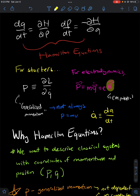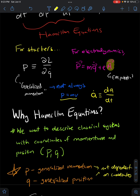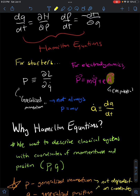For starters, we define p as being the partial derivative of the Lagrangian with respect to the generalized velocity. This is the generalized momentum. So it's not always going to be equal to p equals mv. Sometimes the momentum takes on different forms, like in electrodynamics. The generalized momentum is only equal to mv for the case where L equals T minus V, where T is kinetic energy and V is potential energy.